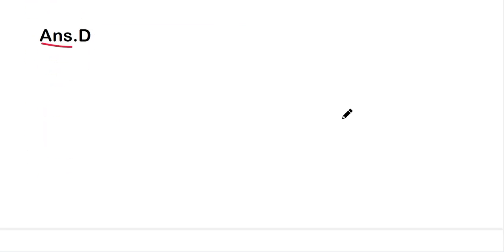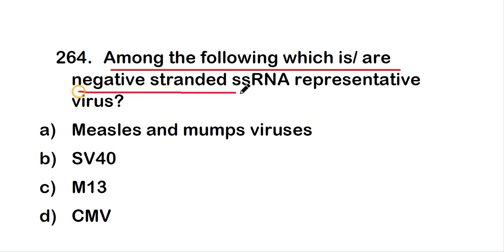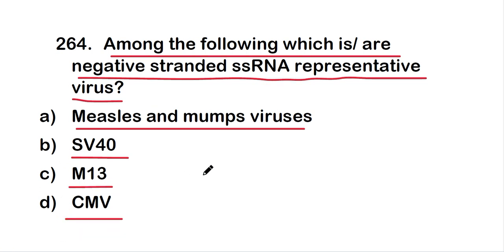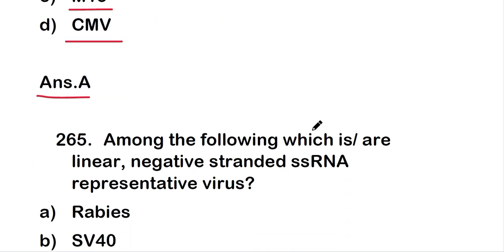The next question: among the following, which is or are negative-stranded RNA representative virus? The options are measles and mumps virus, SV40, M13, or CMV. The right answer is option A — measles and mumps virus are negative-stranded single-stranded RNA representative viruses.